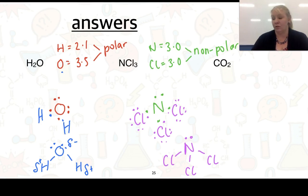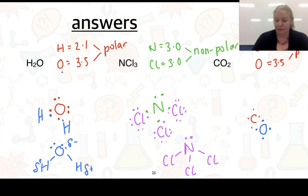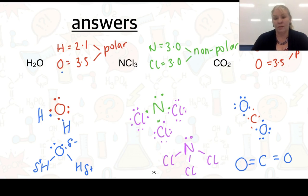For CO₂, carbon has an electronegativity of 2.5 and oxygen is 3.5, giving a difference of 1.0 — so the bonds are polar. Drawing CO₂, carbon forms double bonds with each oxygen. Since oxygen has the higher electronegativity, it carries the delta negative charge and carbon carries the delta positive, giving delta negative–delta positive–delta negative across the molecule.